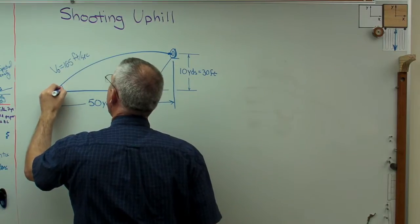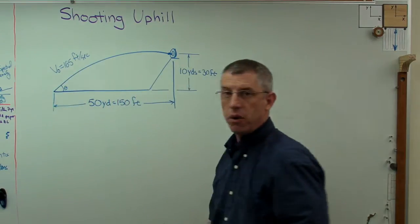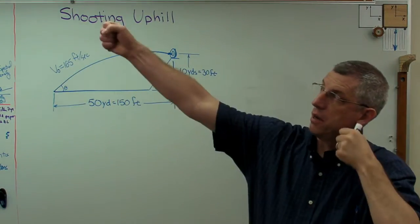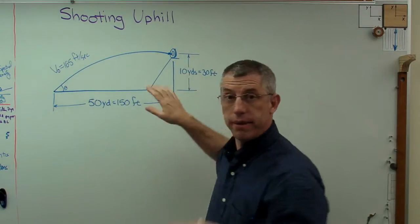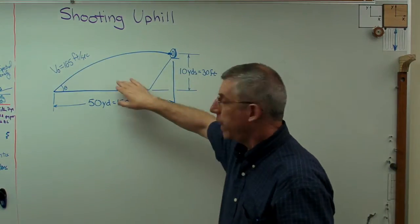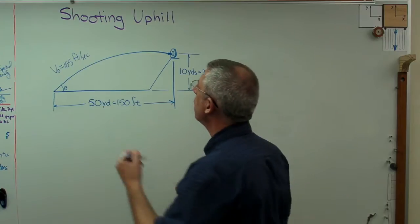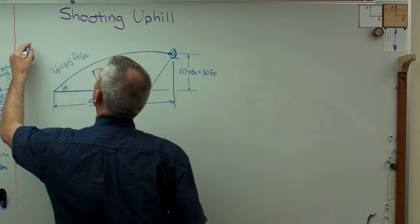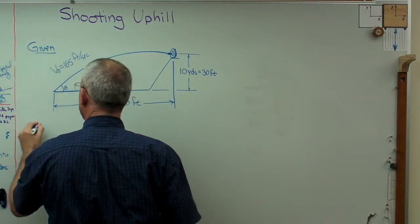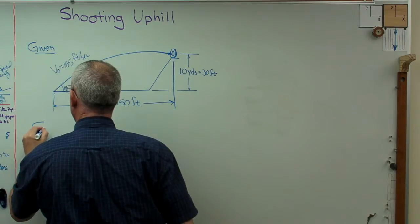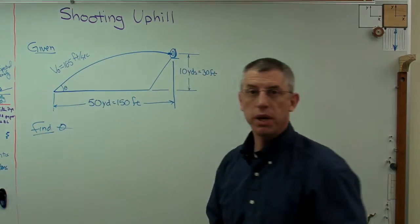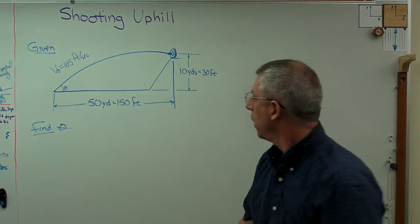And there's some angle here, theta, that I would have to hold the bow at — going up like that — in order to hit that target. So what would that angle be? We're given all this stuff, and we need to find theta. That seems pretty easy.